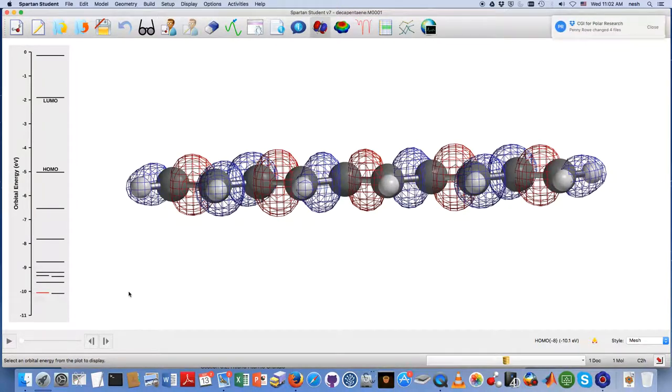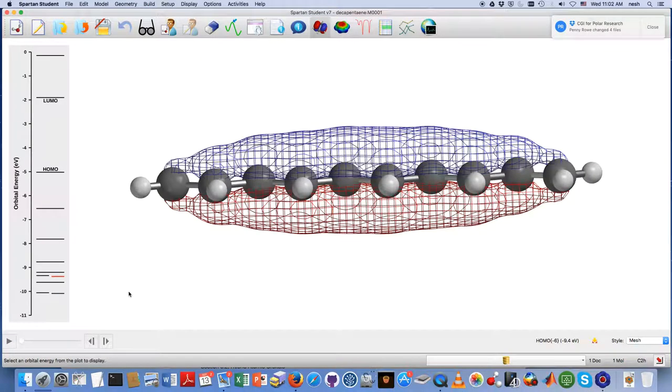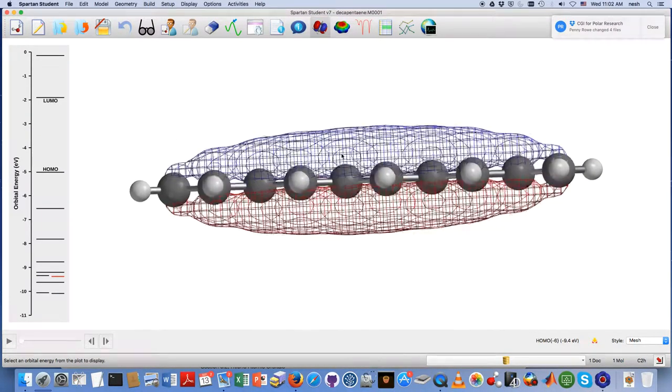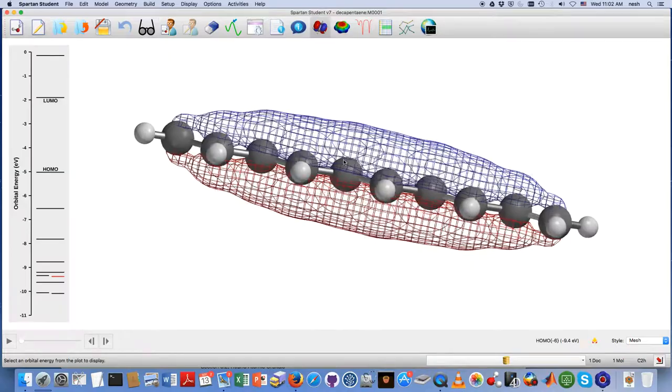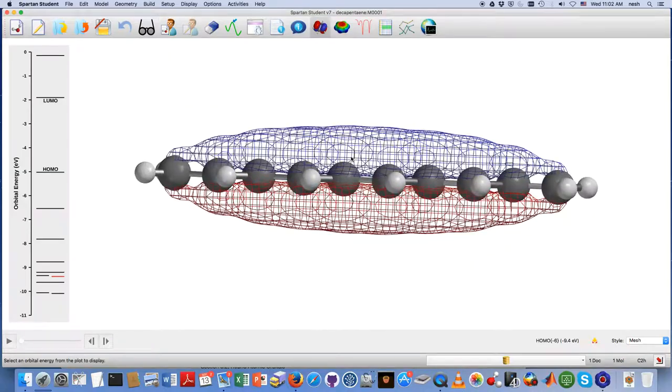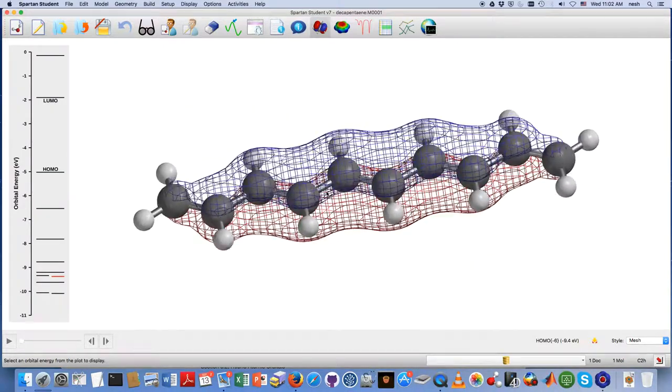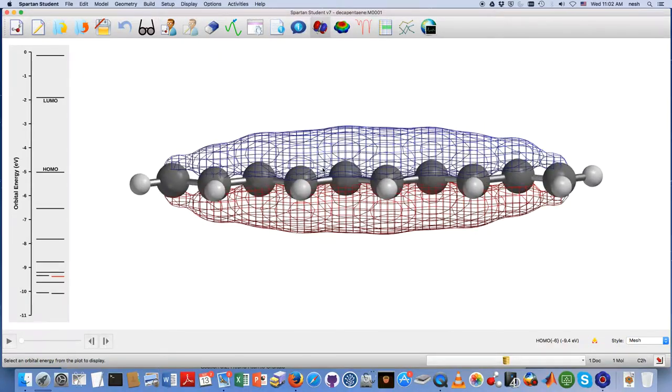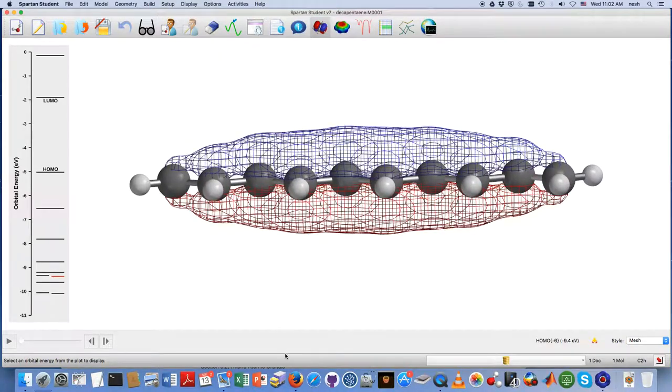Here we get our first instance of one that's going to have what we call pi symmetry. You can see it has reflection symmetry across the plane of the molecule, and it doesn't have any transverse nodes—no nodes at all moving in the up and down direction.